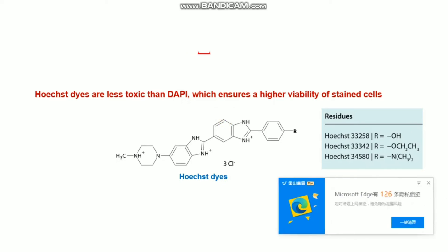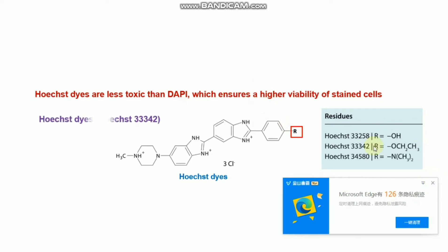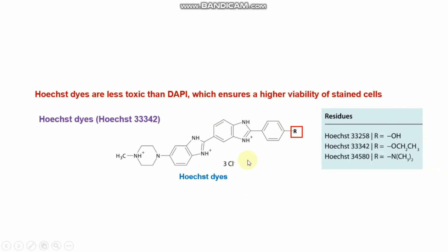The additional ethyl group in certain Hoechst dyes renders more cell permeability. For example, Hoechst 33342 has an additional ethyl group at this position, and that renders more permeability of this dye.